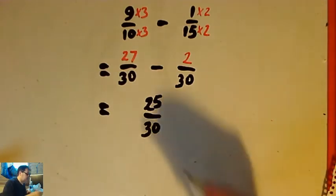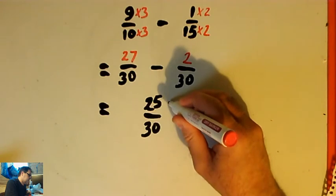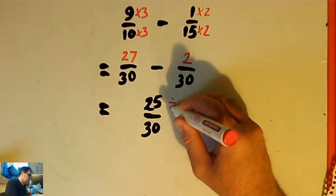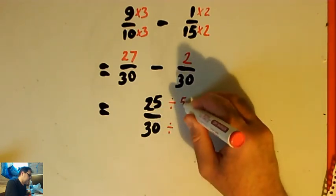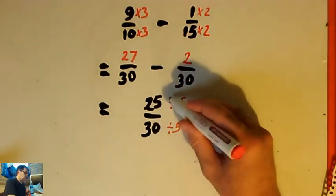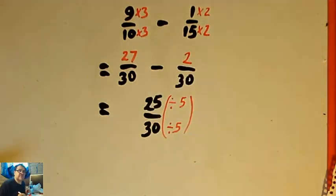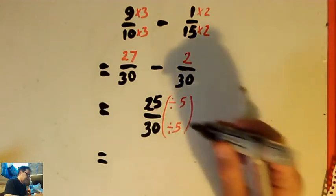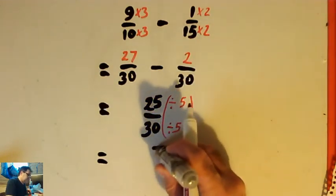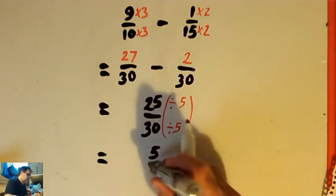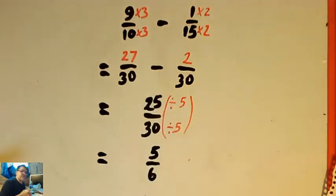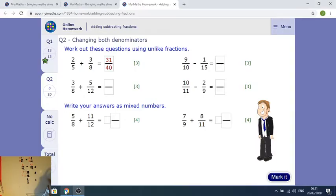So 27 thirtieths minus 2 thirtieths is 25 thirtieths. I notice that 25 and 30 can be reduced because they both have a common factor of 5. So I divide by 5 over 5, which is just like dividing by 1 — I'm just writing it a different way. 25 divided by 5 is 5, and 30 divided by 5 is 6. So that's the same as 5 sixths: 5 on the top and 6 on the bottom.